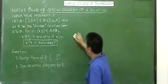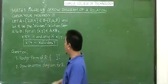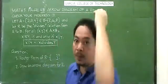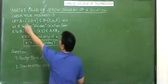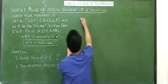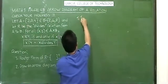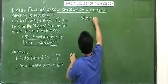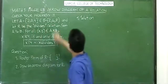Now, the question is: find the roster form of R. So we will solve this. First, we find A cross B. So for the solution number one, we find A cross B.